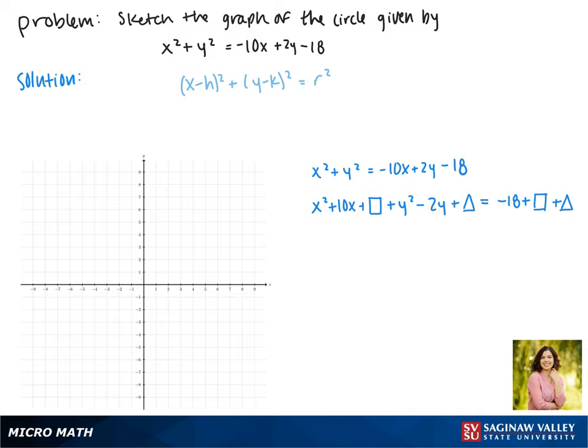When we're completing the square we find that constant by doing b over 2 all squared. For our x's that b value is 10. 10 divided by 2 is 5 and 5 squared is 25 so we'll add a 25 to each side.